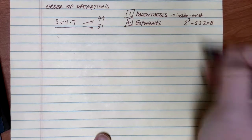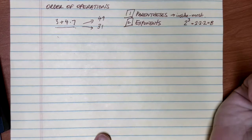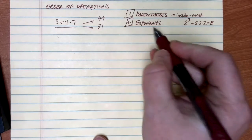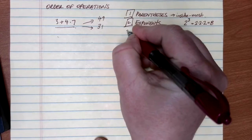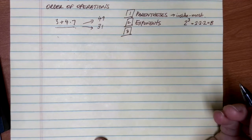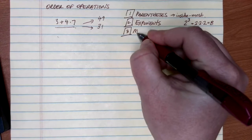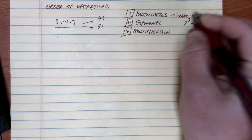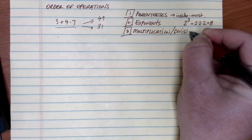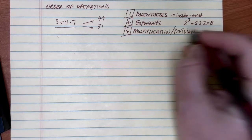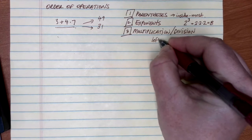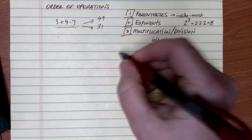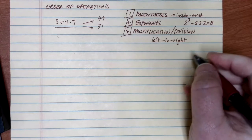2 to the 3rd power is 8. So if there are parentheses, do those first; if there are exponents, do those next. In our example of 3 plus 4 times 7, there aren't parentheses and there aren't exponents, so we keep working down the checklist. The next thing to check for is multiplication and division. If there's more than one, do them left to right — multiplication and division have equal priority.